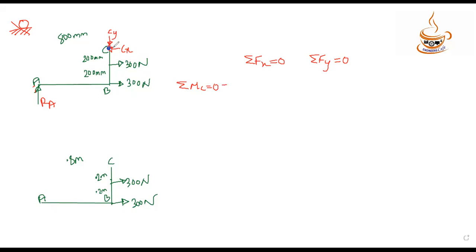C, Y and C, X — solving: C, X is equal to zero and you can't be equal to zero. So we'll see that C is equal to zero. The components of the reaction at C: C, Y and C, X are determined from the equilibrium equations and the moment summation, giving C equal to zero.